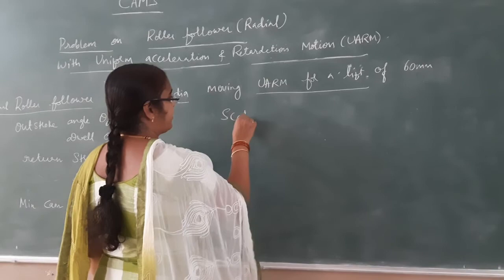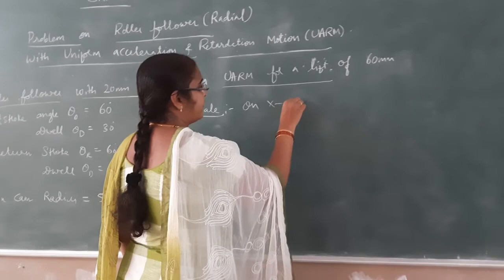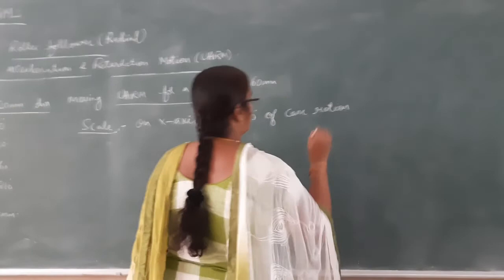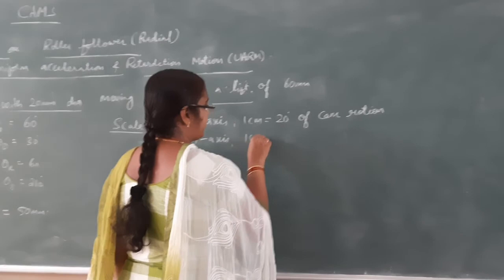We are supposed to take a suitable square. On the x-axis I am going to take 1 cm equal to 20 degrees of cam rotation, and on the y-axis I am going to take 1 cm equal to 10 mm of follower lift.